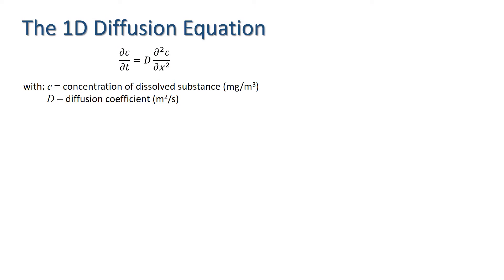Diffusion of a dissolved substance can be modelled in one spatial dimension using the equation dc/dt = D·d²c/dx², where c is the concentration of the dissolved substance and D is the diffusion coefficient, which is a measure of how rapidly the substance diffuses.